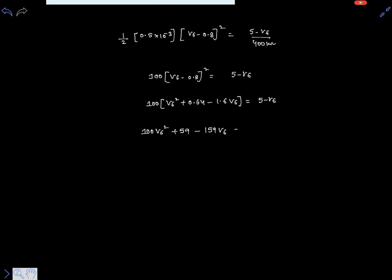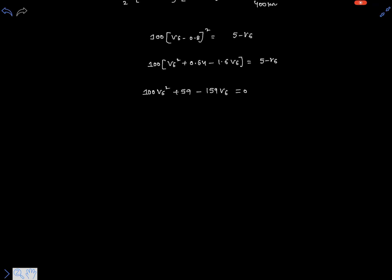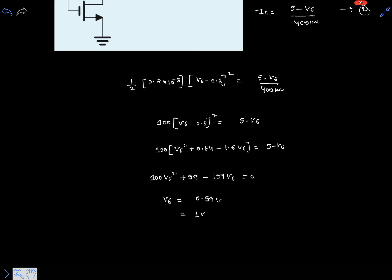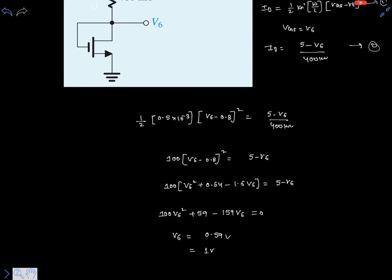Let's use a calculator to solve this quadratic expression. By using calculator, we can solve V6 is 0.59V and 1V. Two possible roots are there for this equation.